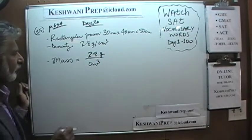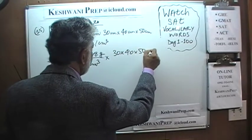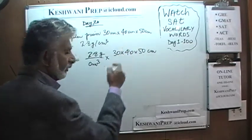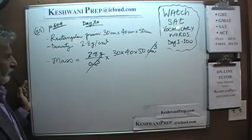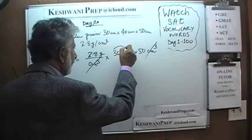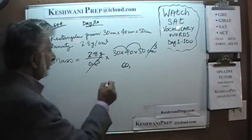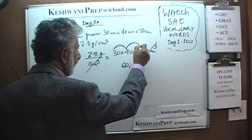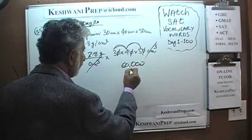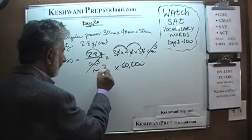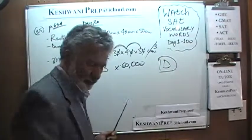Centimeter times centimeter times centimeter gives us centimeter cubed, times 30 times 40 times 50. Centimeter cubed drops out, and we just have to figure out the math. 3 times 4 is 12, and 12 times 5 is 60. Pay attention — this is where people are likely to make a mistake. We have 60 and then three zeros, giving us 60,000. So 60,000 times 2.8 is approximately 3, giving us something around 168,000. The answer is D.